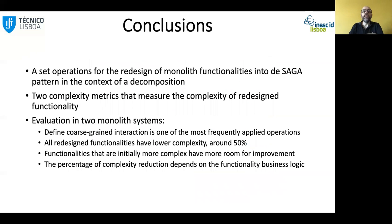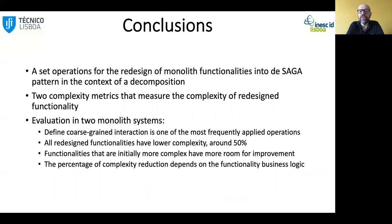To conclude: we have defined a set of operations for the redesign of monolith functionality into the saga pattern in the context of a decomposition, two complexity metrics that measure the complexity of the functionality, and an evaluation on two monolith systems. We conclude that defining coarse-grained interactions is highly relevant, all redesigned functionalities have lower complexity, functionalities that are initially more complex have more room for improvement, and the percentage of complexity reduction depends on the functional business logic.